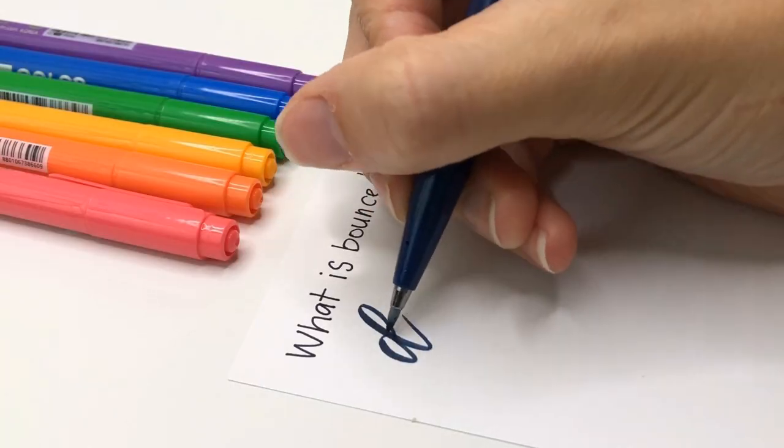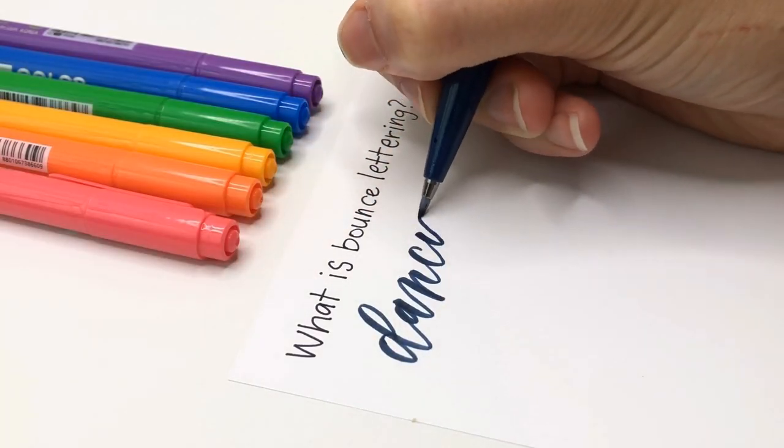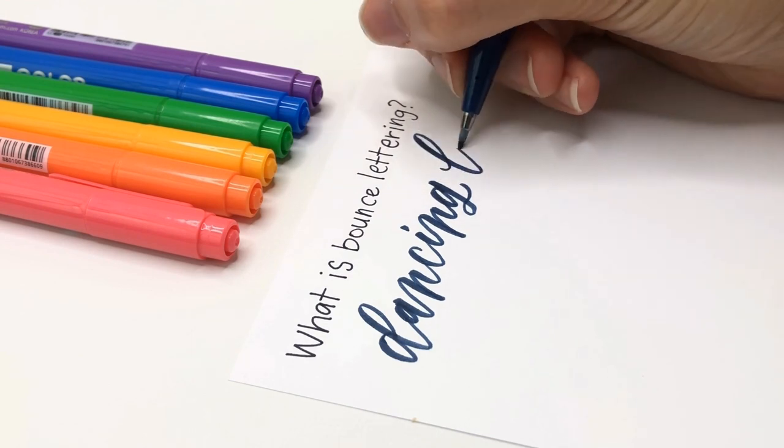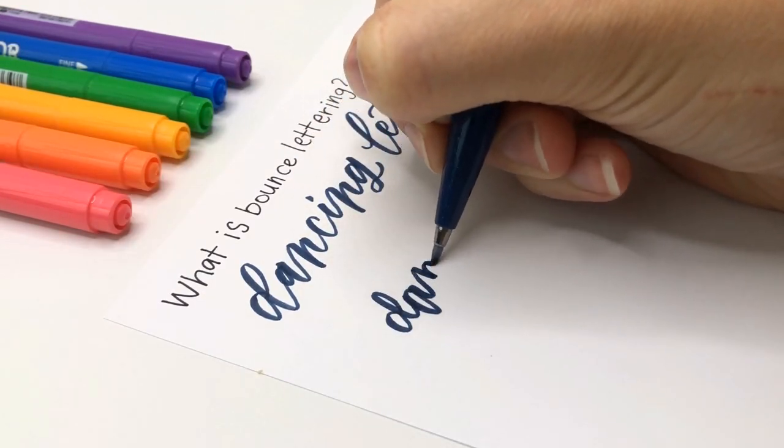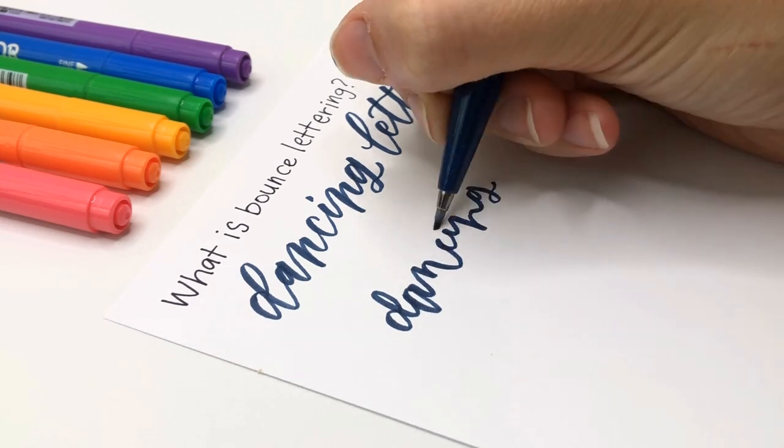So first of all, what is bounce lettering? To describe it simply, bounce lettering is when you make your letters dance by varying the baseline. So how do you actually do that without making it look messy? That's where the three rules come in.